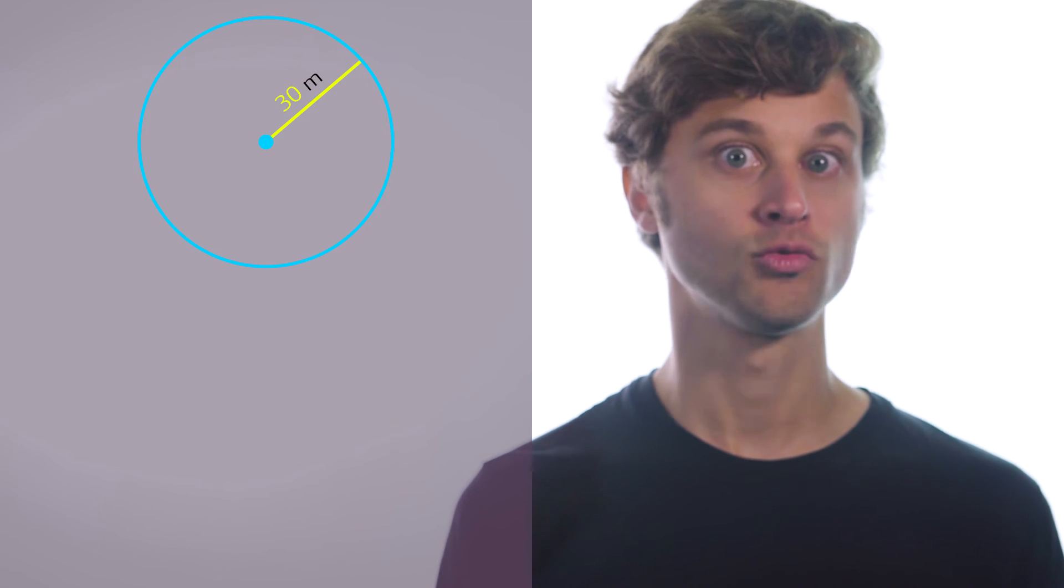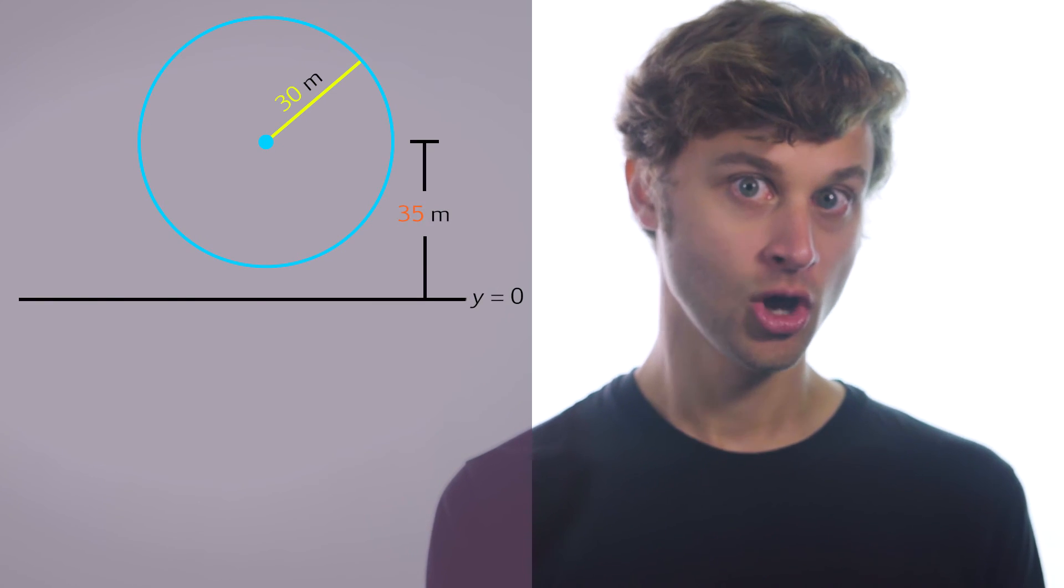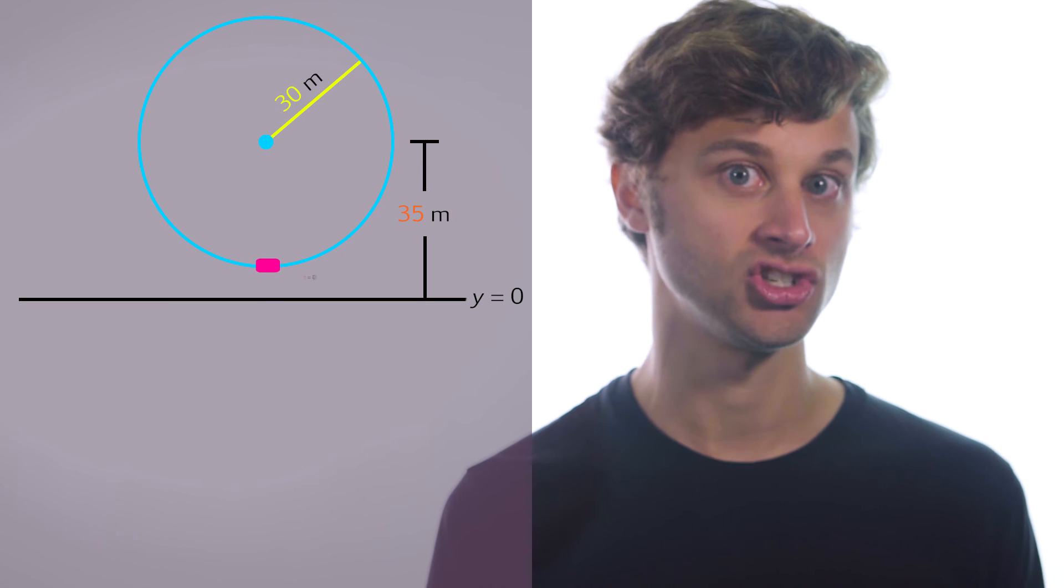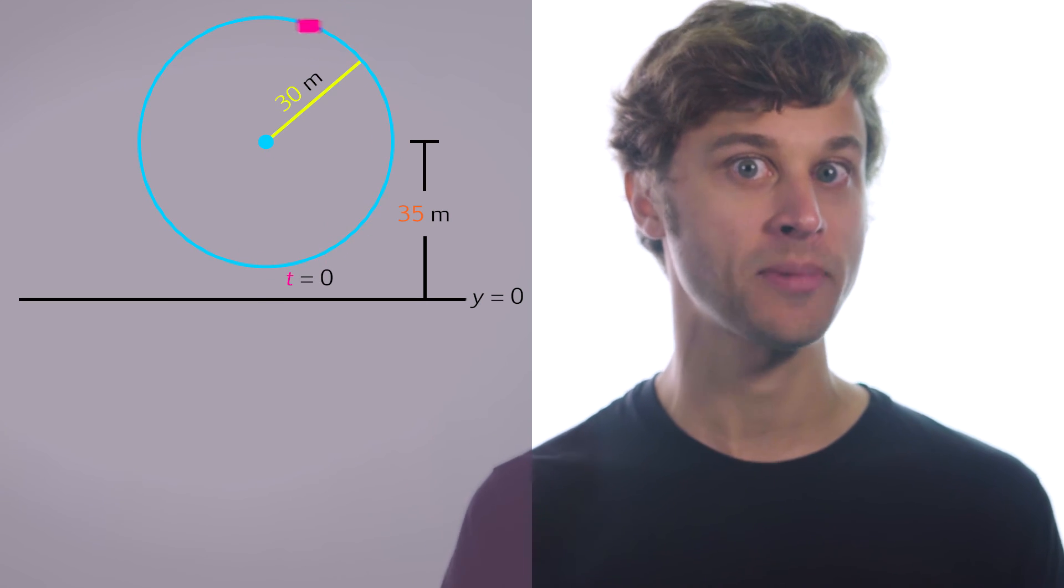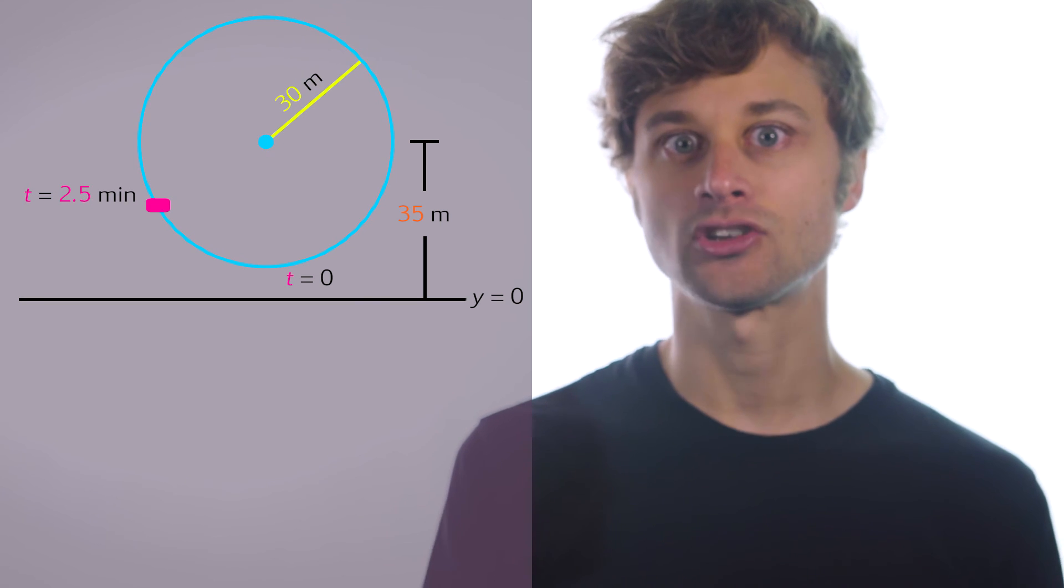The question is this: Imagine I have a Ferris wheel of radius 30 meters that rotates once every three minutes. If the center of the Ferris wheel is raised above the ground 35 meters, what is the height of a passenger two and a half minutes after the passenger gets on at the bottom of the Ferris wheel?